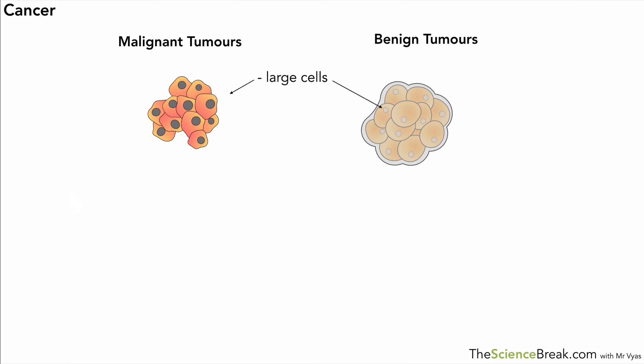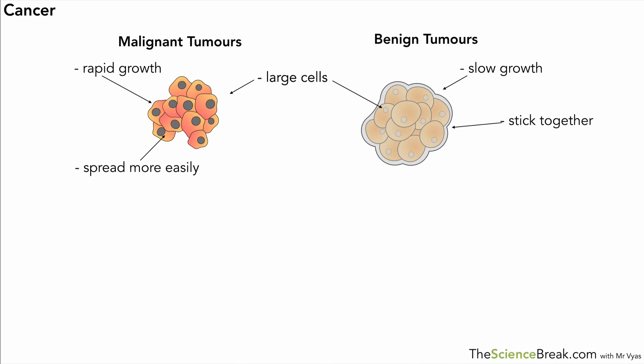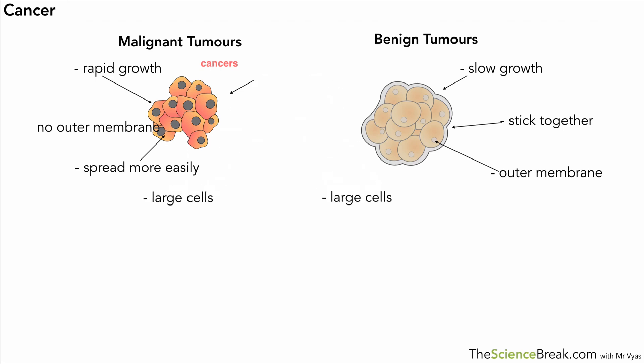So here's an overview of what we just said. Both types produce large abnormal cells. Benign tumours show slow growth, while malignant tumours show rapid growth. Benign tumours tend to stick together, whereas malignant ones can spread much more easily. Benign tumours have an outer membrane; malignant tumours do not. And remember, malignant tumours can form secondary tumours around the body.